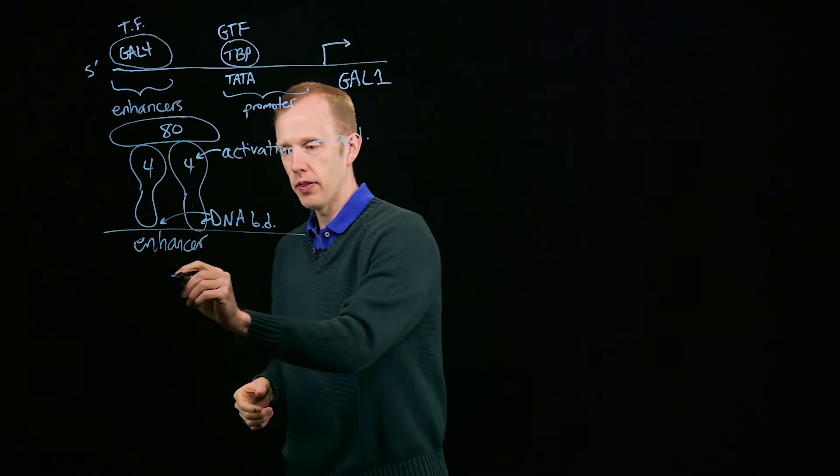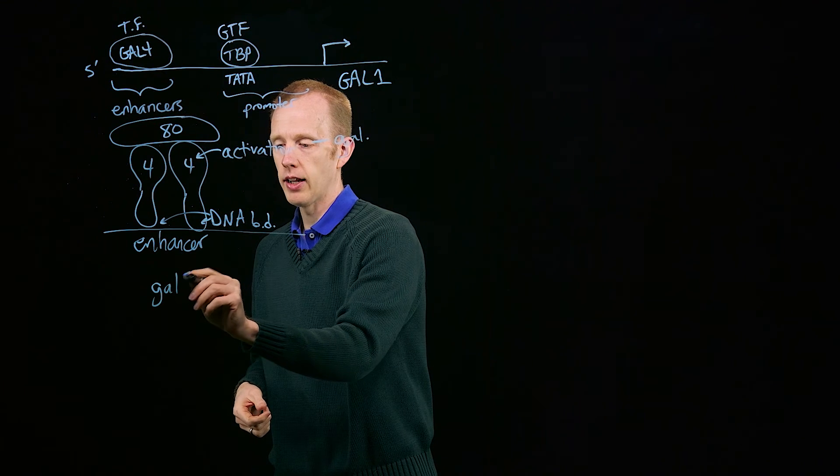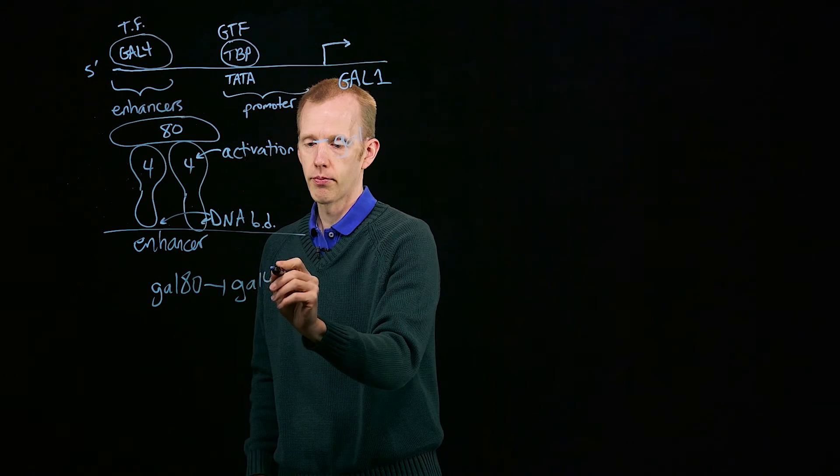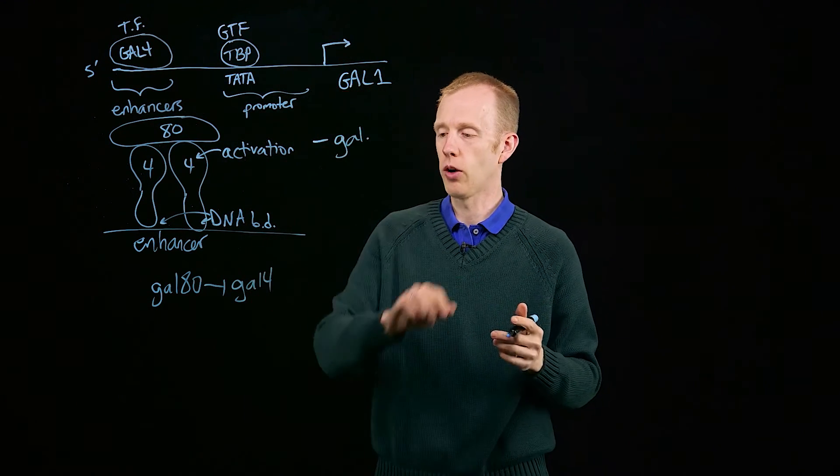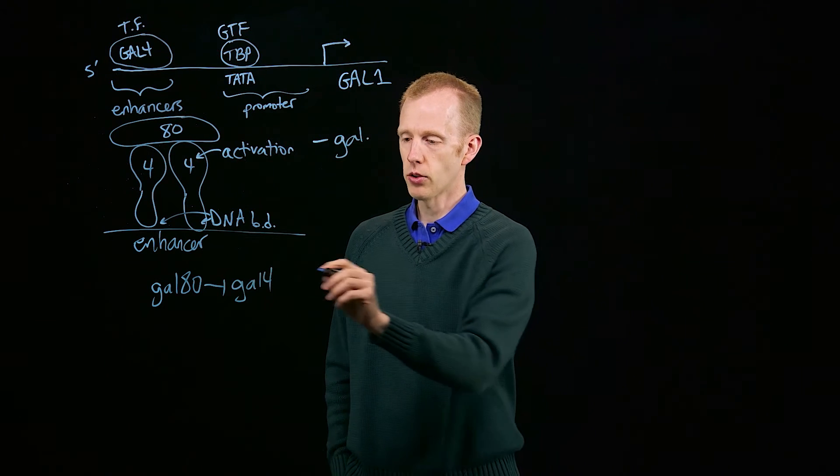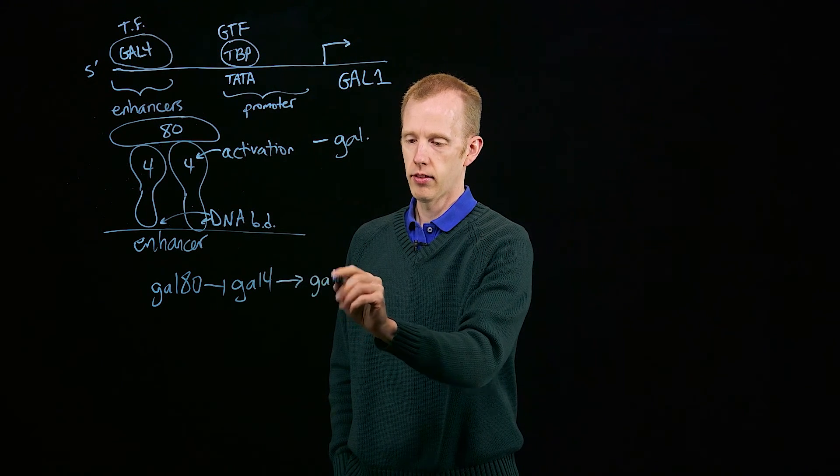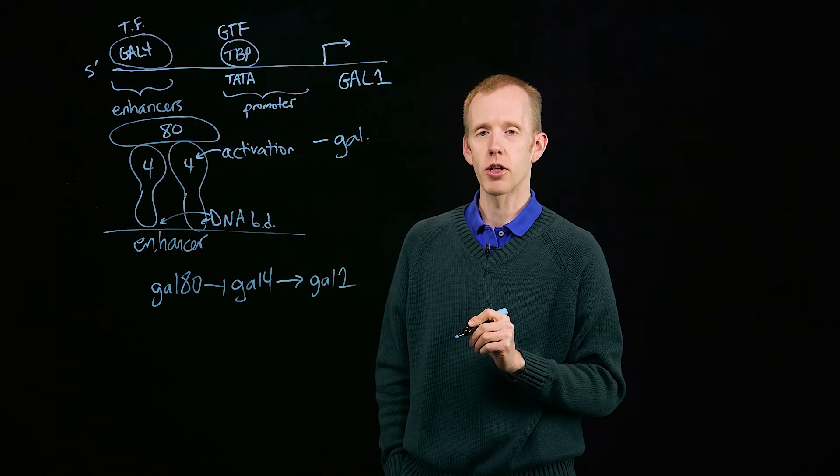Another way to think about this is to draw the genetic pathway. We have GAL80, which represses GAL4, prevents it from doing its normal function in the cell, which is activation of GAL1. GAL4 will normally, in certain circumstances which we're about to talk about, turn on the expression of GAL1.